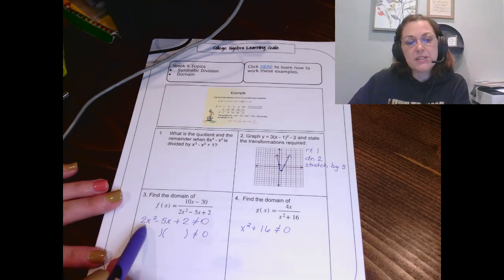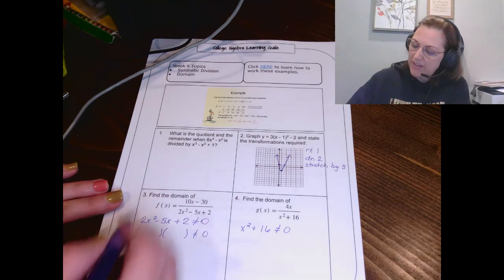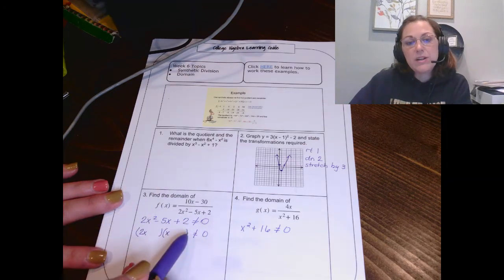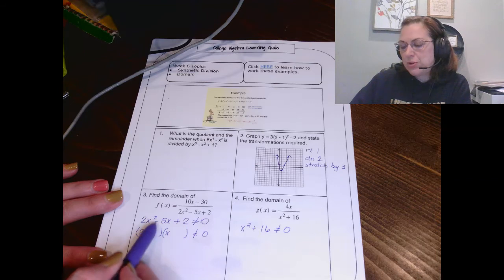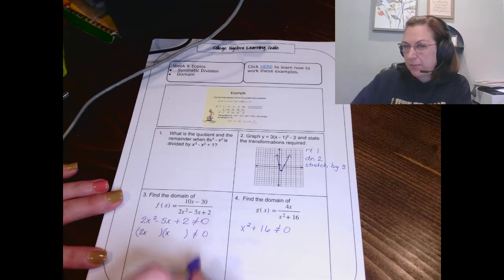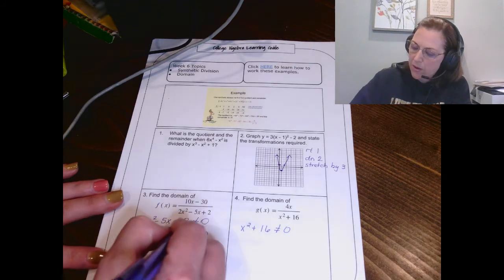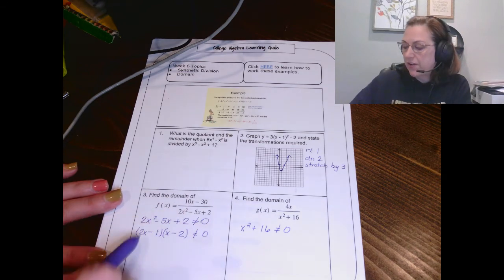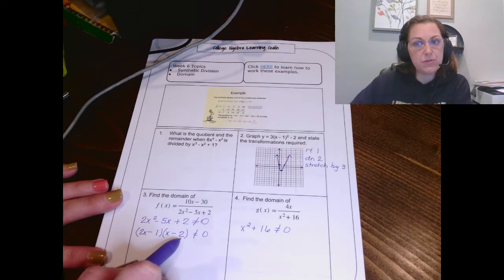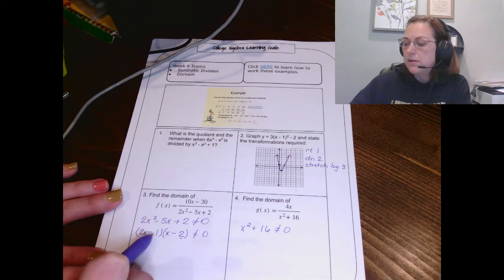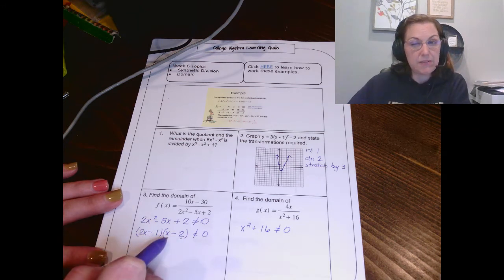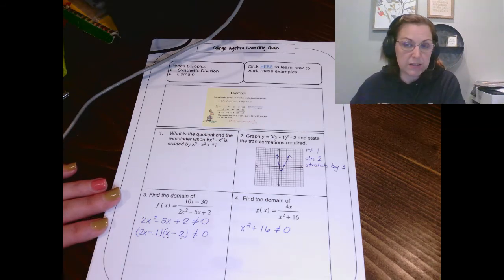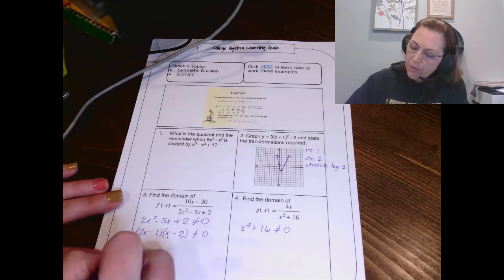So I asked myself, what times what would give me 2x squared? That's 2x and x. And then what times what would give me 2? But I'm noticing this negative here, so I'm going to have to be really careful. I think there's some negatives going on. Minus, minus. Now check here. I've got 2x times negative 2. That gives me negative 4x. Negative 1 times x gives me negative x. So negative 1 times negative 1x times negative 4x would give me negative 5x. That's going to work.